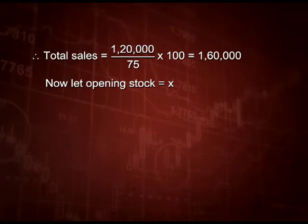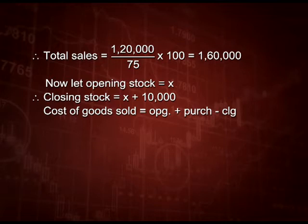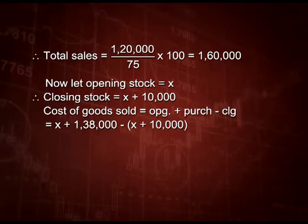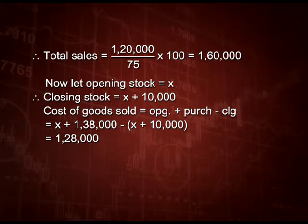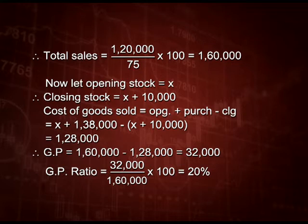Let us assume opening stock as x because it is not given. So closing stock will be x plus 10,000. Cost of goods sold is opening stock plus purchases minus closing stock: x plus 1,38,000 minus (x plus 10,000) gives us 1,28,000. Gross profit is total sales minus cost of goods sold: 1,60,000 minus 1,28,000 equals 32,000. So the GP ratio is 32,000 divided by 1,60,000 into 100, giving 20 percent.